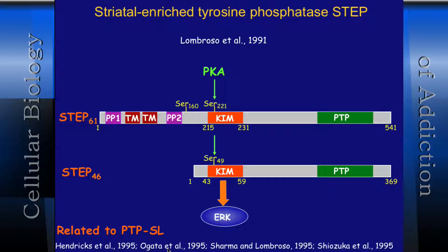STEP is an interesting phosphatase. It comes in two flavors: STEP-61 (the bigger form) and STEP-46, which are splice variants of each other. It has a tyrosine phosphatase domain and a KIM domain — kinase interaction motif — which is a modular domain that recruits the phosphatase to its substrate. STEP gets phosphorylated by the upstream kinase on a tyrosine and a threonine residue.